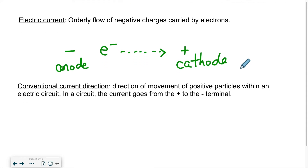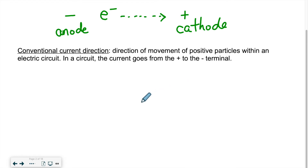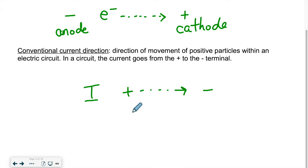So conventional current actually works the opposite way. It was decided a long time ago, before we had all this knowledge about electrons, that current — which we call I, so the letter that represents current is the letter I — would flow from positive to negative.